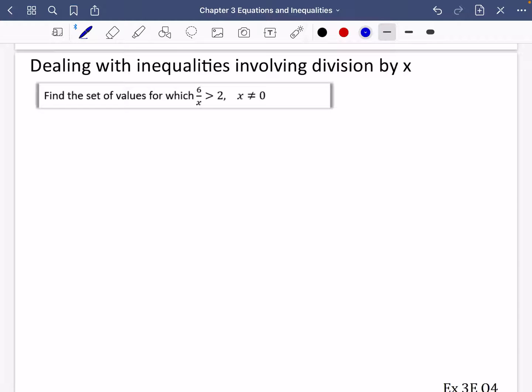So the temptation would be to do this: you have 6 over x is greater than 2, and so I'm going to multiply both sides by x, multiply this by x and this side by x, so that I get 6 is greater than 2x. But there is a possible problem here.